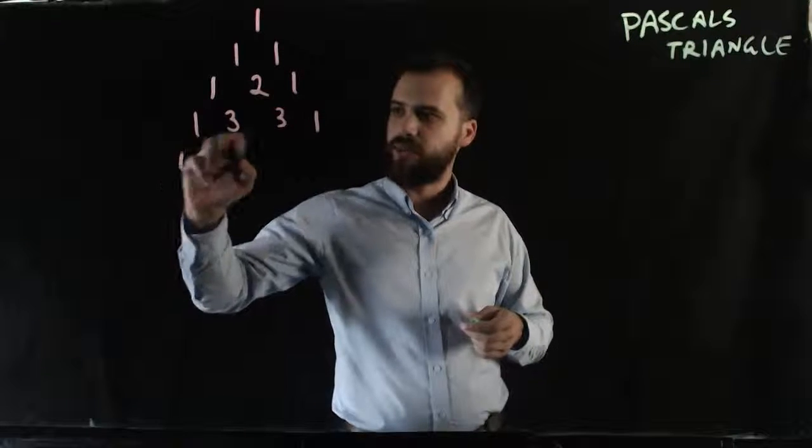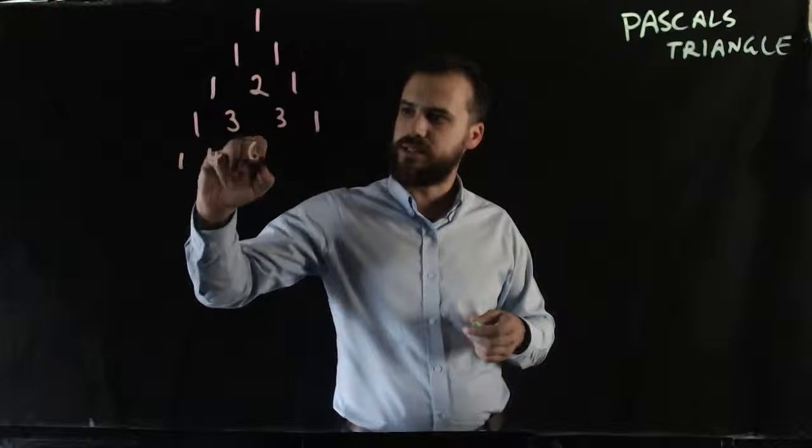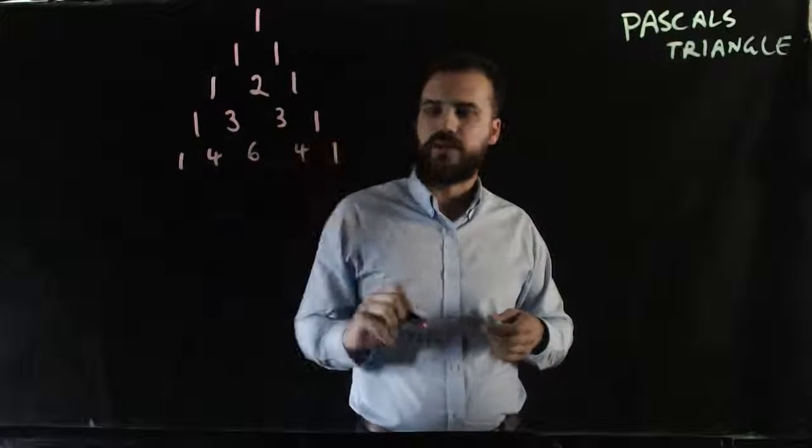1 out on the edge, 1 plus 3 is 4, 3 plus 3 is 6, 3 plus 1 is 4, and then 1 out on the edge.